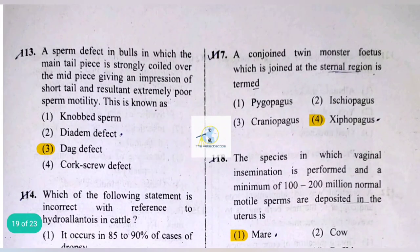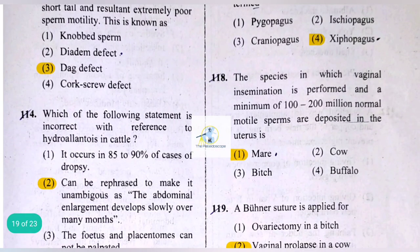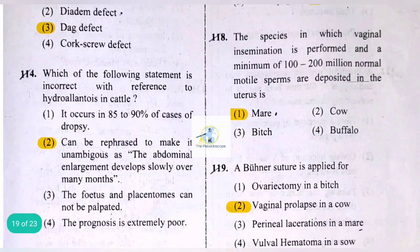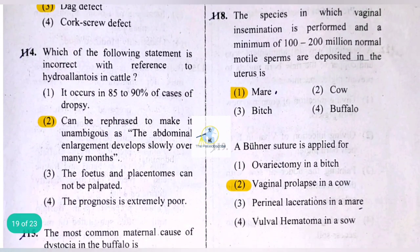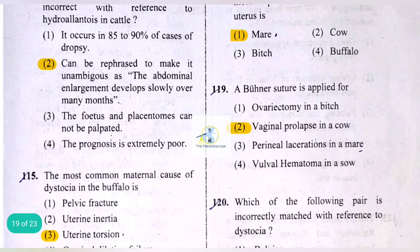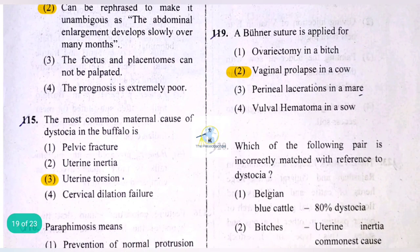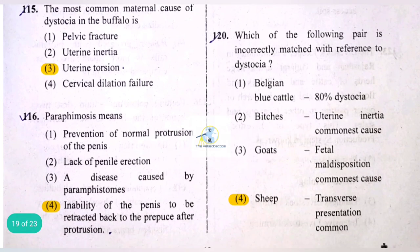A conjoined twin monster fetus joined at the sternal region is termed schistosomus reflexus — or cyphorophagus. The species in which vaginal insemination is performed with a minimum of 100 to 200 million normal motile sperm deposited is the mare. A Bühner suture is applied for vaginal prolapse in a cow.